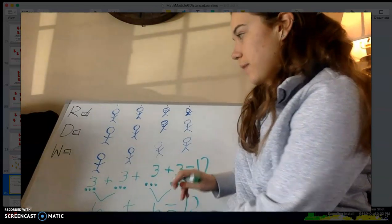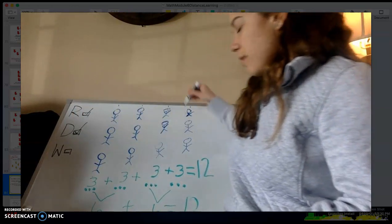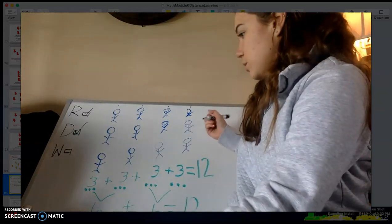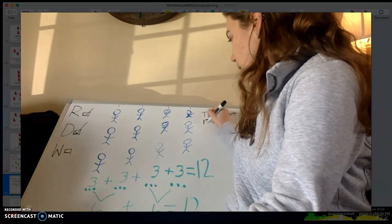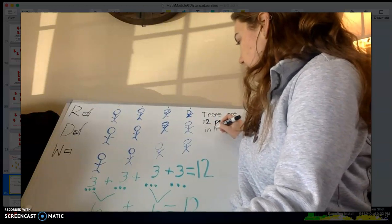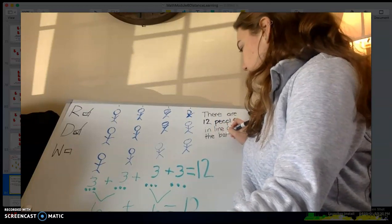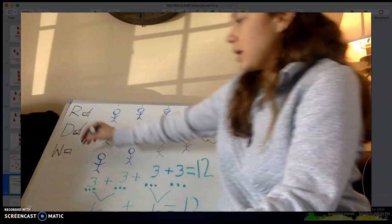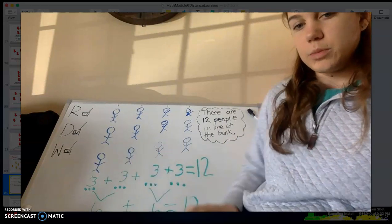Now I'm going to write our word sentence. We read our problem, we drew our array, we wrote our number sentence, and now we write our word sentence: 'There are twelve people in line at the bank.' Remember to put your period, then put it in our cloud — and we wrote our problem. There is our application problem all solved.